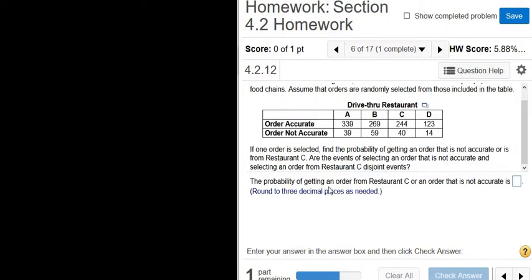It says, the probability of getting an order from restaurant C or an order that is not accurate. So we want the probability of getting an order from restaurant C or, that's the key word, an order that is not accurate.